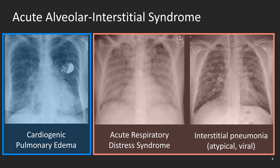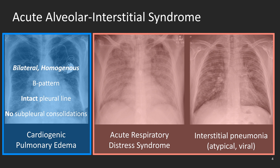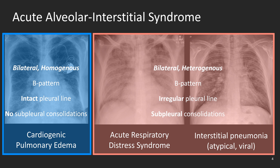Cardiogenic pulmonary edema, which is a non-inflammatory illness, will be seen as bilateral homogeneous B pattern — that is, bilateral B lines seen in almost all intercostal spaces, an intact pleural line, and no subpleural consolidations. ARDS and interstitial pneumonia, however, are both inflammatory processes, which explains why they are seen as bilateral heterogeneous B pattern with irregular pleural line and subpleural consolidations, meaning that some areas of the lung will have a lot of B lines with irregular pleural line and subpleural consolidations while other areas will be completely spared and close to normal.